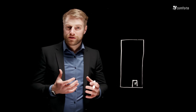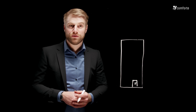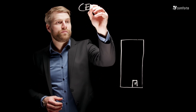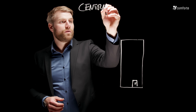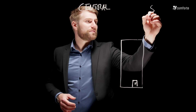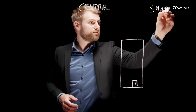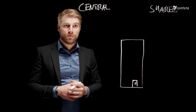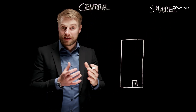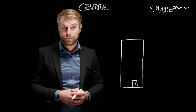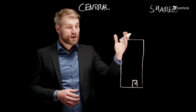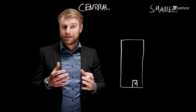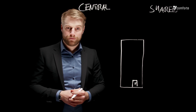When it comes to secret isolation there are two basic ways you can do it. One is the central access model and the other one is the shared access model. In a central access model the protection system and its secret are stored in a central location, whereas in the shared access model you distribute the secrets to all those instances that need to get access to the sensitive information.